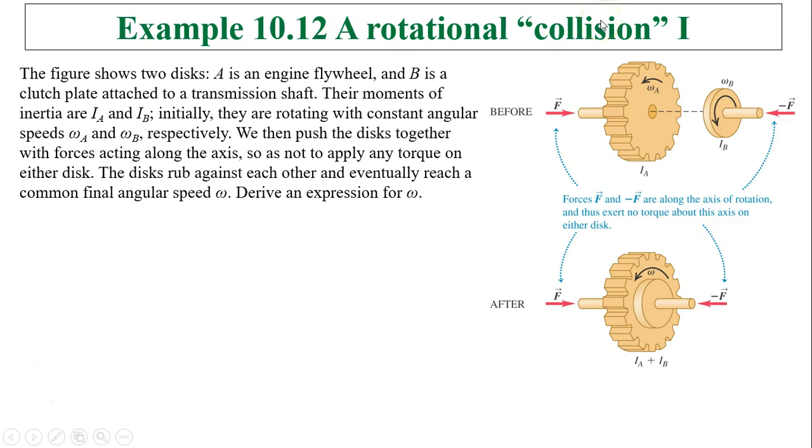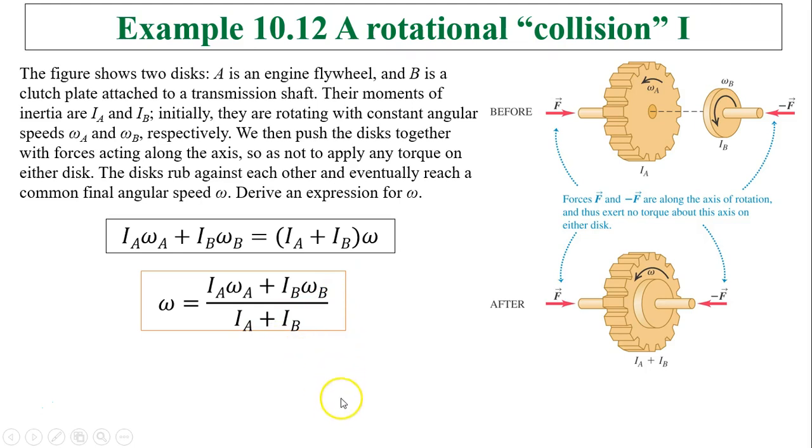Another example, rotational collision one. The figure shows two disks. A is an engine flywheel, and B is a clutch plate attached to a transmission shaft. Their moment of inertia IA and IB, initially, they're rotating with constant angular speeds omega A and omega B, respectively. We then push the two disks together with forces acting along the z-axis. The external force we do does not produce any torque. The disks rub against each other and eventually reach a common final angular speed omega. What is omega? So here is before and here is after. Before, IA omega A plus IB omega B should equal (IA plus IB) times omega. So from here we can solve for omega, simply divide IA plus IB on both sides.